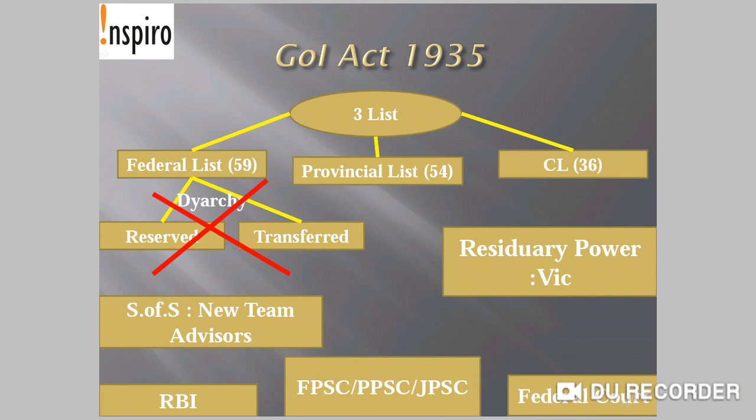The Diarchy system in the provinces, introduced by the Government of India Act 1919, was abolished by the Government of India Act 1935. But Diarchy was introduced at the central level — a reserved list and a transferred list of subjects — though that provision also did not come into force. The Secretary of State's Council of 15 members was dissolved and a new team of advisors was appointed to the Secretary of State.